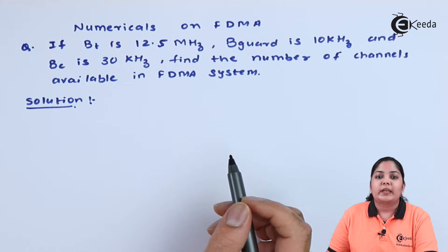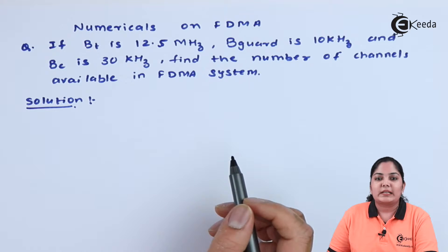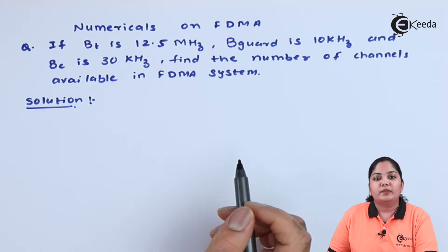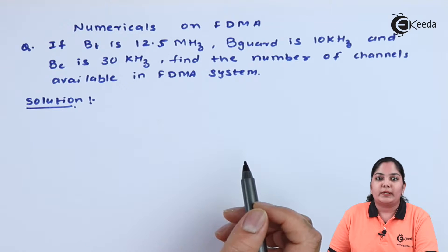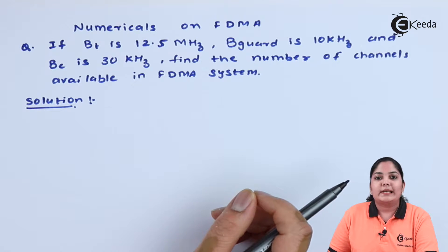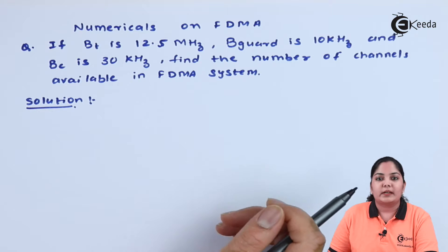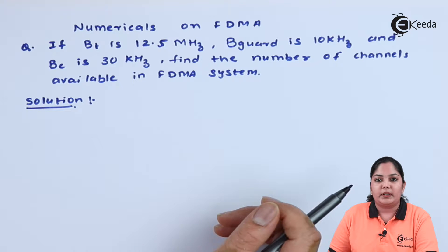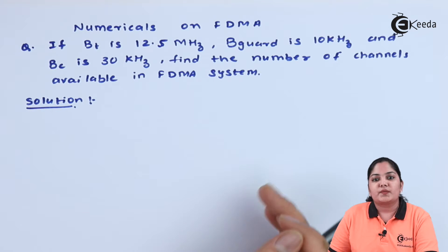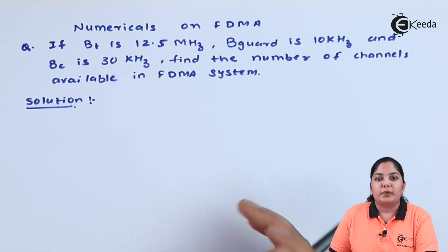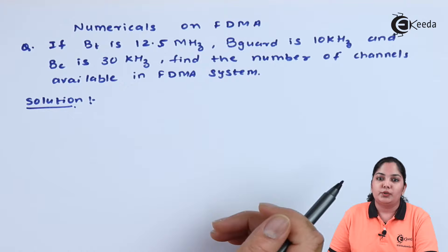In FDMA, every user is divided on frequency, and on those frequencies we keep separate bands called guard bands in which no data is transmitted — they are used just for separation between multiple users.